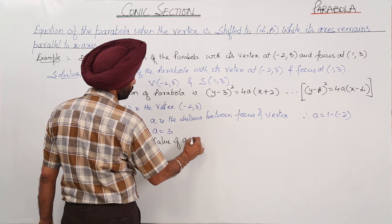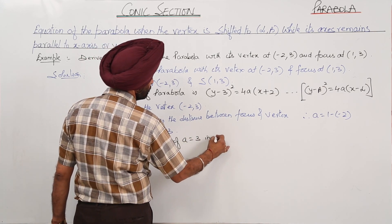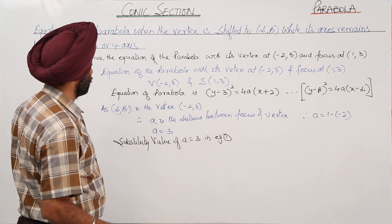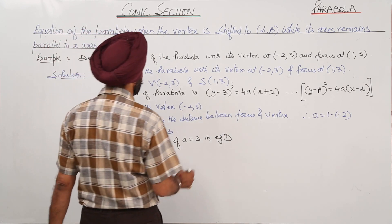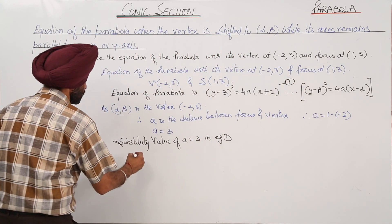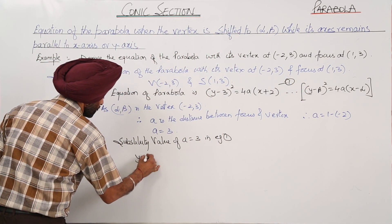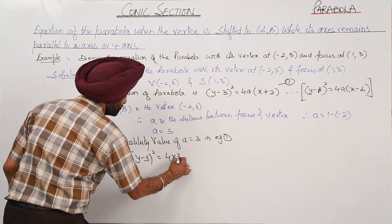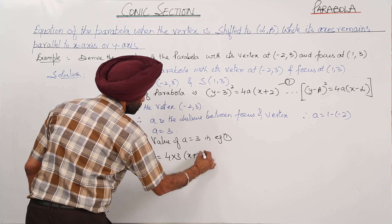Substituting value of a is equal to 3 in equation 1. Let this be equation 1. In equation 1, we are having (y-3)² is equal to 4 times 3 times (x+2).